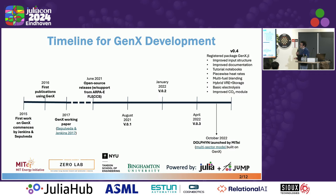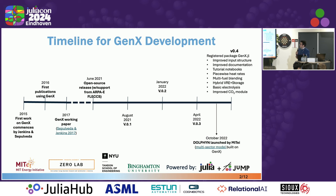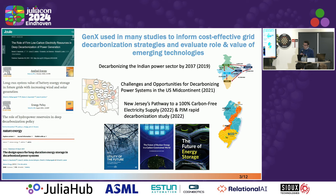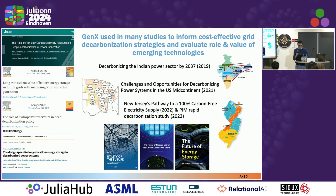GenX was conceived and developed around 2015 by Professor Jesse Jenkins as part of his doctoral dissertation. Over the years, it has expanded its user base, first by being released as open source software and later by registering it as an official Julia package. Today, GenX is used by several institutions and companies worldwide, and it has informed numerous studies on cost-effective decarbonization strategies for power grids for different countries, primarily the U.S. and specific states of the U.S., but also India and other parts of the world.